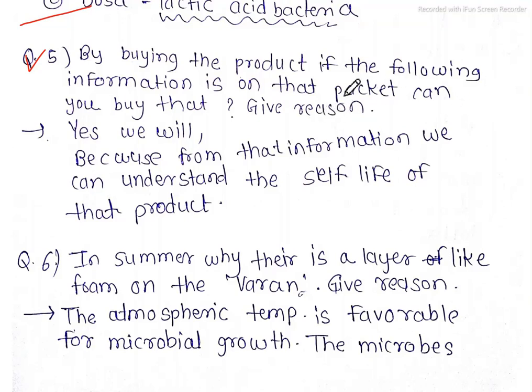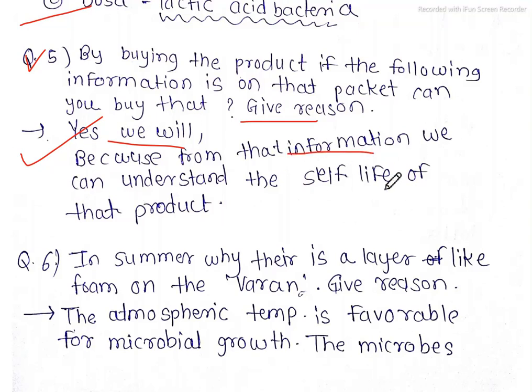Question number five: by buying a product, if the following information is on the packet, can you buy that? Give a reason. The packet has manufacturing date, expiry date, and price. Yes, we will buy it. The reason is that from that information we can understand the shelf life of the product.